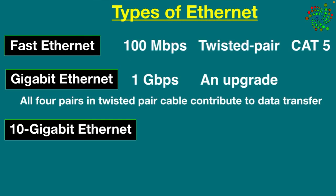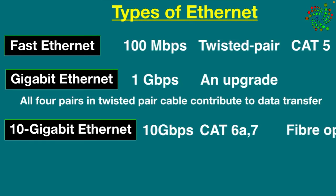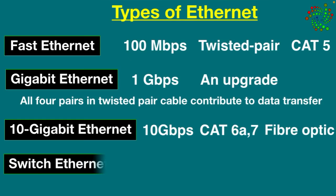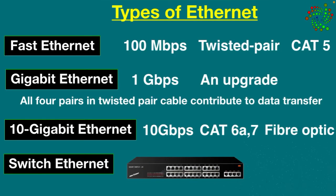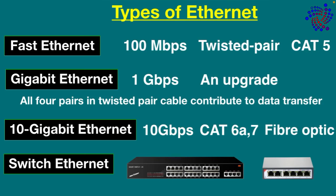10 Gigabit Ethernet is supported by Cat 6a or Cat 7 twisted pair cables as well as fiber optic cables. Switch Ethernet requires a switch or hub and uses normal network cables. Network switches are used to transfer data from one device to another without interrupting any other device in the network.